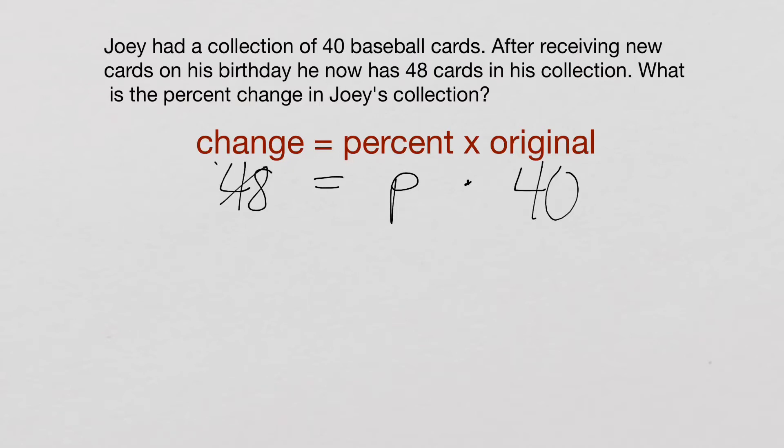That is actually wrong. We don't want to put that there. I know it says 48 in the problem, but whenever we see change, we always want to represent the amount of the change. So if his collection went from 40 to 48, it changed by 8. You always need to do a quick finding the difference of the numbers there to get the amount of the change, not what it changed to.